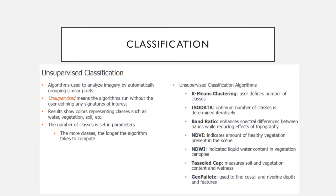When we talk about classification, there are two kinds: unsupervised and supervised. Unsupervised classification is an algorithm used to analyze imagery by automatically grouping similar pixels. It runs without the user defining any signatures of interest; the results show colors representing classes such as water, vegetation, soil, etc. The number of classes is set in the parameters — the more classes, the longer it takes to compute.